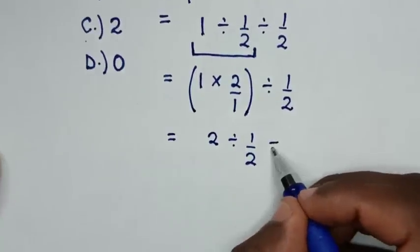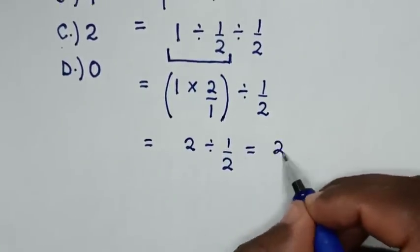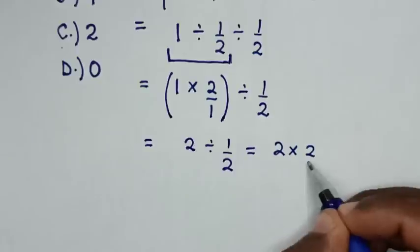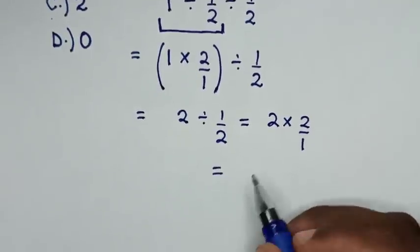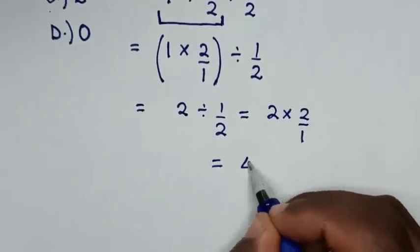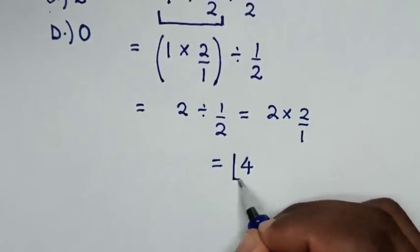So it will be equal to 2 ÷ 1/2, which is the same as × 2/1. So finally, it will be equal to 2 × 2 = 4. So this is our final answer.